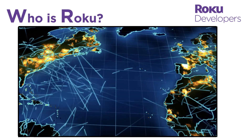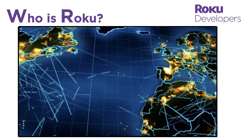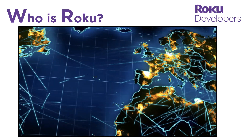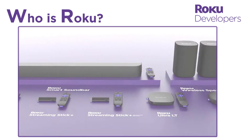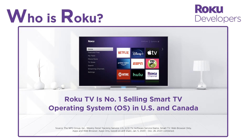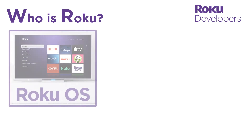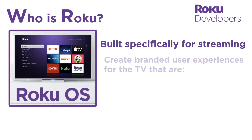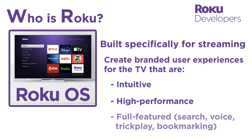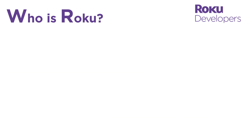Roku is at the forefront of the streaming revolution, having pioneered video streaming in the United States and now expanding its reach across the globe. Roku produces award-winning streaming players and has developed what is now the number one TV streaming operating system in the United States and Canada. The Roku OS is built specifically for streaming, which means publishers can seamlessly develop intuitive, high-performance channels designed especially for the TV.